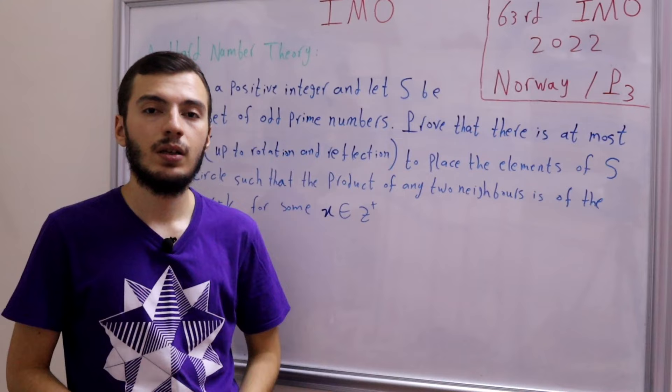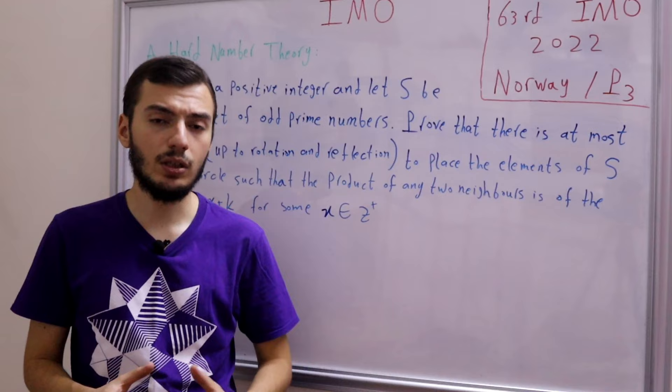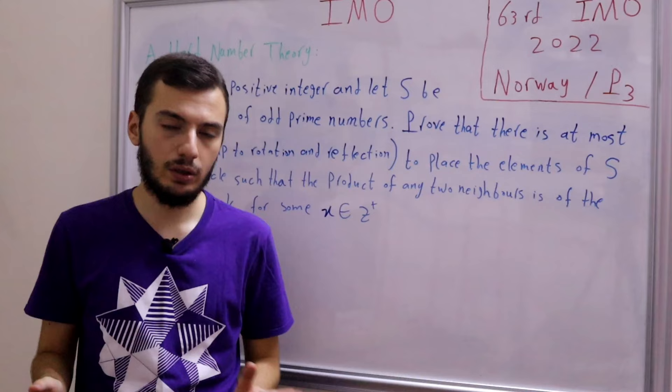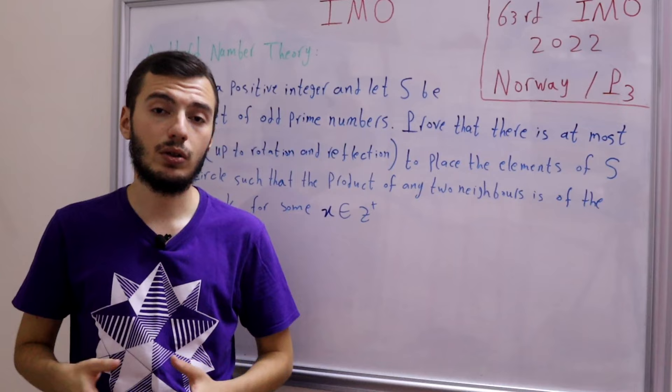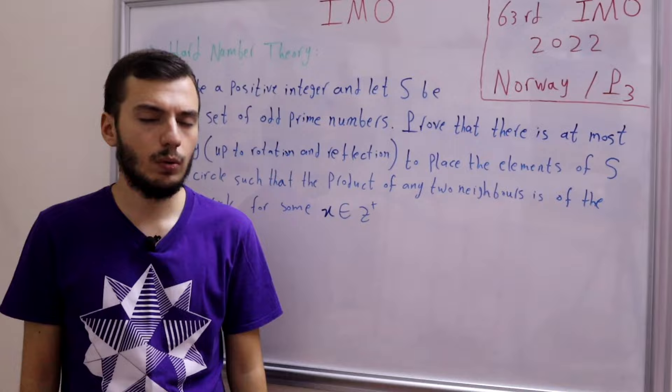Problem 1 was a bit easy, problem 2 was medium or between medium and easy. Now we'll be discussing problem 3, which is supposed to be really hard. In the IMO we have two papers — day 1 and day 2, each with three problems. Problems 1 and 4 are easy, 2 and 5 are medium, and 3 and 6 are really hard. So let's get started!